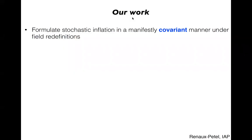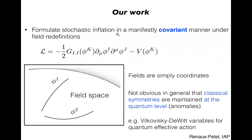In our work, we show how to formulate and derive stochastic inflation in a manner that is covariant under field redefinitions, which has never been done before. The context is that of multi-dimensional field spaces in inflation with multiple scalar fields interacting through their potential and their kinetic terms with a generic field space metric. Classically, you can make any field redefinitions — for instance, use Cartesian or polar coordinates to describe a flat field space without changing the physics. But it's not obvious to maintain such classical symmetries at the quantum level, and as stochastic inflation is a way to deal with quantum effects, you can expect the problem to be non-trivial.